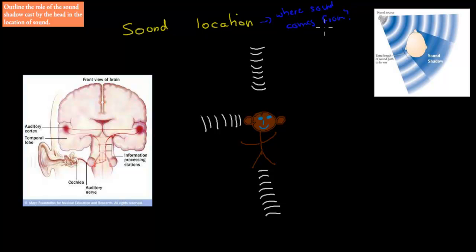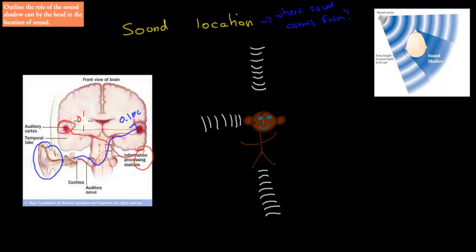Our brain has a couple of mechanisms. First of all, we have the left ear connected to the right side of the brain, and the right ear connected to the left side of the brain. That's useful because there's a slight delay — so if a sound takes 0.1 seconds to reach one ear and 0.15 seconds to reach the other, the brain will receive signals from one side first and the other side second.